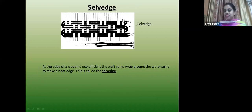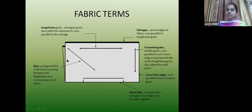The selvedge is at the end of the fabric — where the weft yarn wraps around the warp yarn to make a neat edge. When we keep the fabric for cutting unfolded without cutting the selvedge, the darker, thicker portion is the selvedge. This is the lengthwise grain; this is the crosswise grain. If we cut the bias grain for piping, that is the bias grain — at a 45-degree angle.